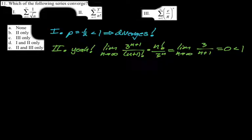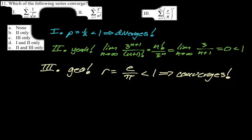The third one is actually geometric. They like to make you compare e and pi. Just remember: e is less than pi, and e squared is greater than pi. So r equals e over pi, which is less than one; therefore the series converges. We are looking for convergence, so two and three converge. The answer is E.